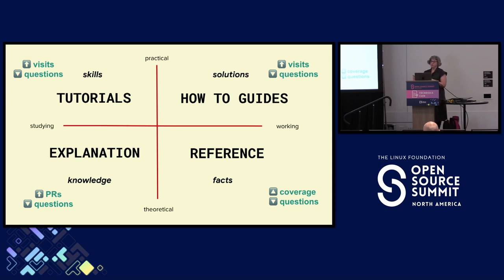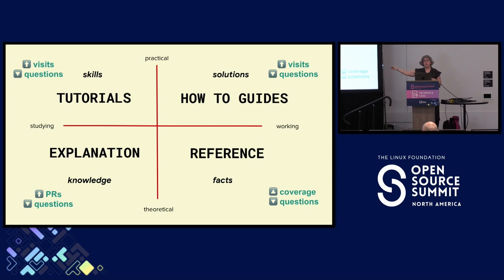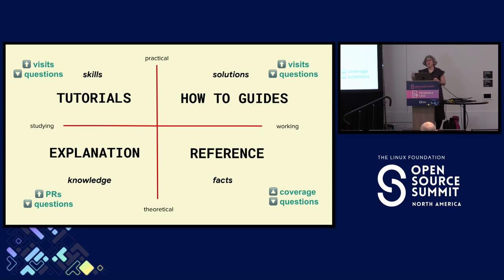Projects usually wanted more people — more users, more contributors — and they wanted less noise: fewer questions, fewer issues. Tutorials drive more people giving your project a try, more visits, more people learning core use cases. How-to guides generate more visits and fewer questions because the guide explains what they had questions about. Explanations generate more PRs because they help more people qualify to contribute by understanding the goals of the project, and fewer questions. Reference makes more parts of your project intelligible to more people — they wanted more API coverage, and fewer questions. There's a common thread: fewer questions across all doc types, and lots of projects just wanted more people.